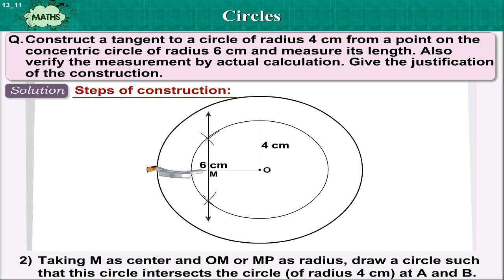Step 2: Taking M as center and OM or MP as radius, draw a circle such that this circle intersects the circle of radius 4 cm at A and B.